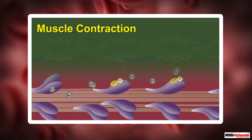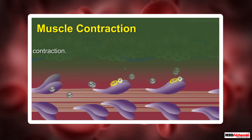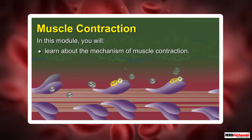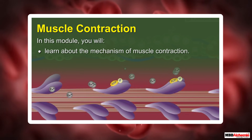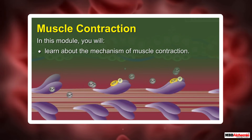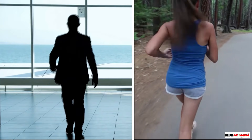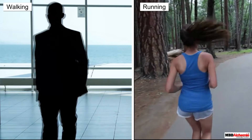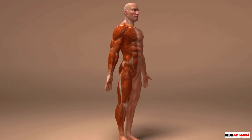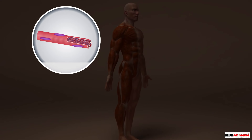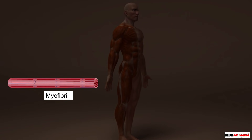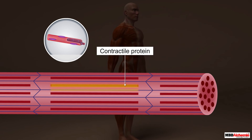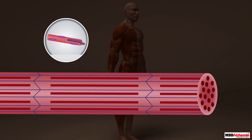In this module, you will learn about the mechanism of muscle contraction. All our body movements, such as walking and running, are possible due to the presence of muscles inside the body. You already know that the myofibril, the simplest unit of muscle, contains contractile proteins that help in the contraction of muscles and thus in body movements.